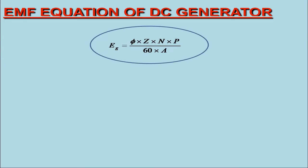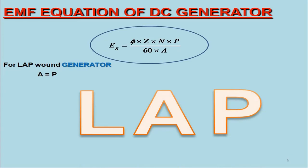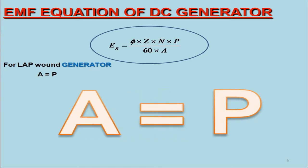Now, for lap wound generator, A = P. You people must note a trick to remember this. Just write lap lap. Now, omit L so as to create in your mind A = P.